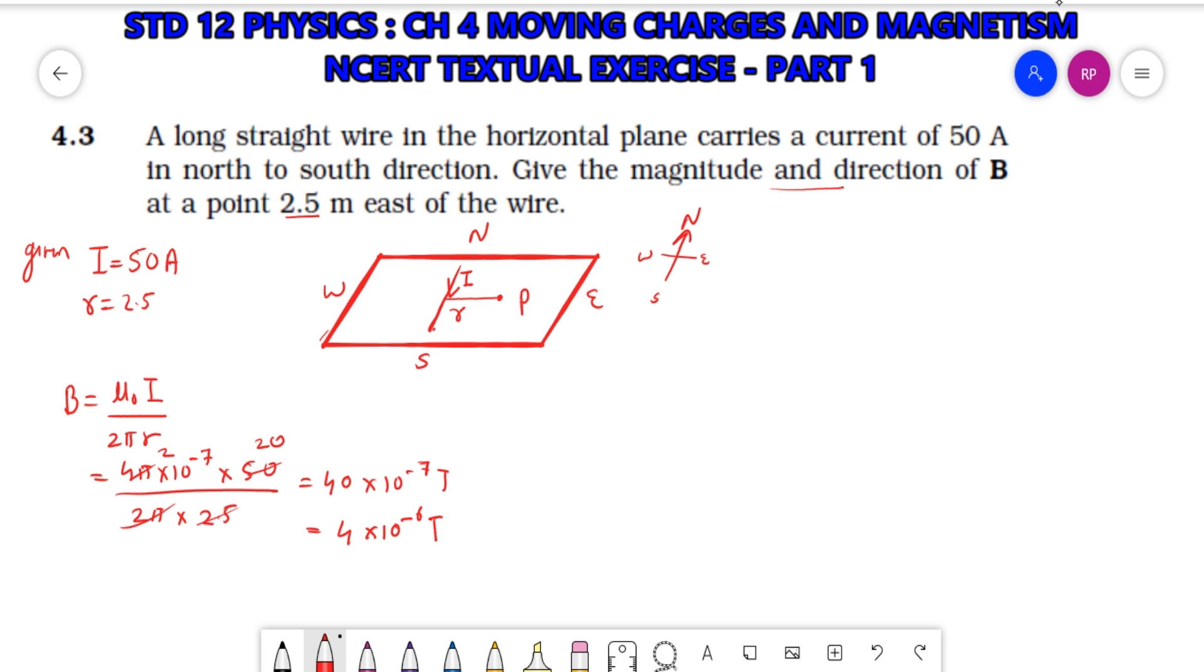For direction, we use right hand rule. Current flows in this direction, so our fingers curl in this direction, which is the west direction. The magnetic field direction here - I will say upward. This is upward direction. The magnetic field is perpendicular to the plane and in upward direction. This is 4.3.